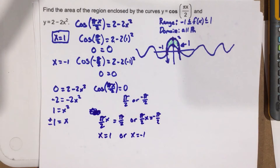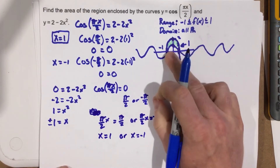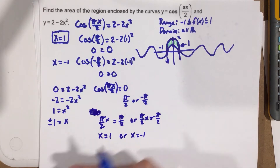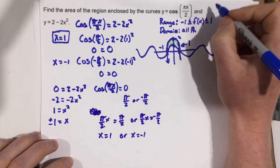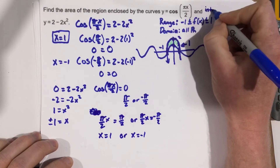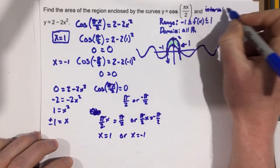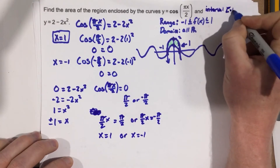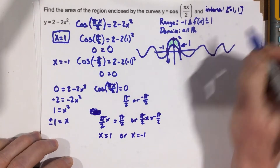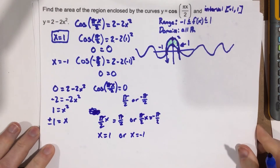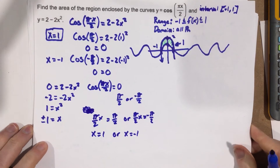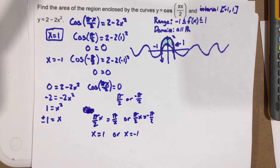Since both functions cross at the same points, we have our boundary points. The interval is going to be from negative 1 to 1. Now let's actually do the integration — all of that work was just to find the a and b values.